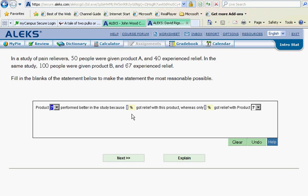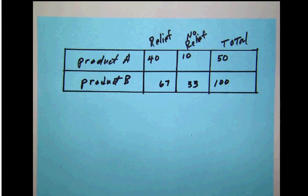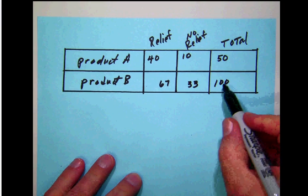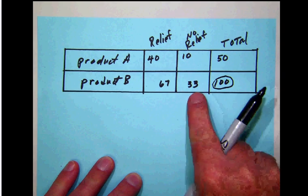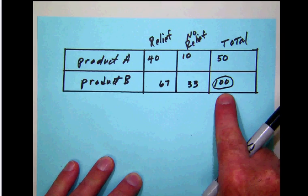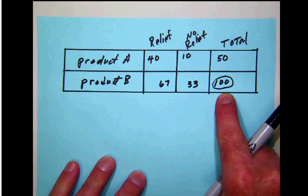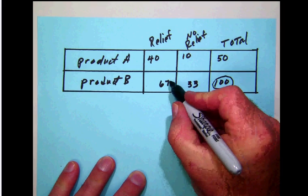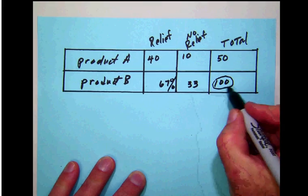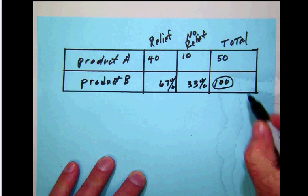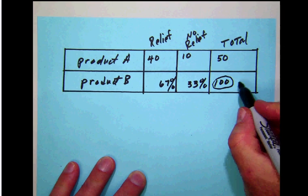Let's keep in mind that percent means out of 100. In this case, it's very easy because these numbers are in fact out of a total of 100. 67 out of 100 would be 67%, and 33 out of 100 would be 33%, making the total, of course, 100%.